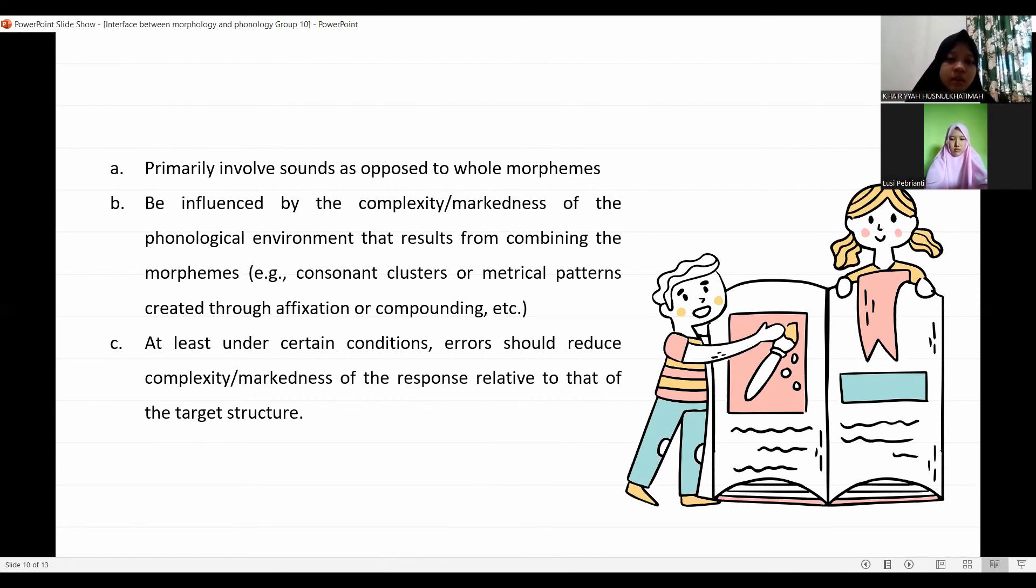For example, consonant clusters or metrical patterns created through affixation or compounding. C, at least under certain conditions, errors should reduce complexity or markedness of the response relative to that of the target structure.